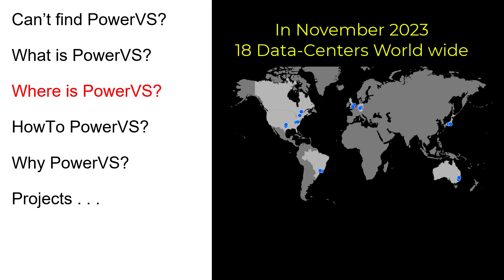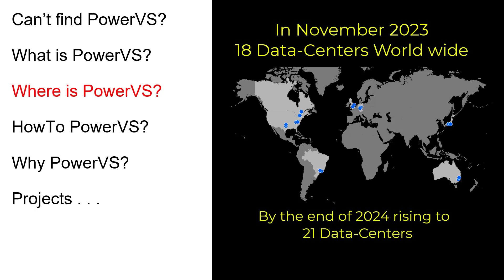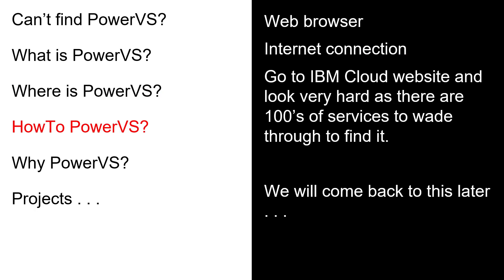So where is PowerVS? The answer is: all around the world. At the end of 2023, there are 18 data centers - they seem to add about two data centers per year on average. These are the cities where they are, and most have multiple data centers per city. This means you can do HA within your country, and some customers need to have their data in their country, so that can be catered for as well. By the end of 2024, three more data centers will take it up to 21.